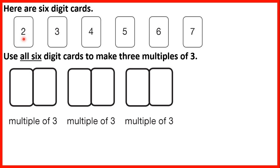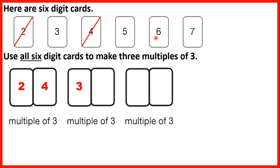Here are 6 digit cards — the digits 2 to 7. Use all 6 digit cards to make 3 multiples of 3. If we take the 2, then 23 is not a multiple of 3, but if we use the 4, then 24 is a multiple of 3 because 8 times 3 is 24. So we can cross off 2 and 4. Now if we use the 3 as our tens digit, 35 is not in the 3 times table. But if we use the 6 as our ones digit, 36 is a multiple of 3 because 12 times 3 is 36. So we can cross off 3 and 6.